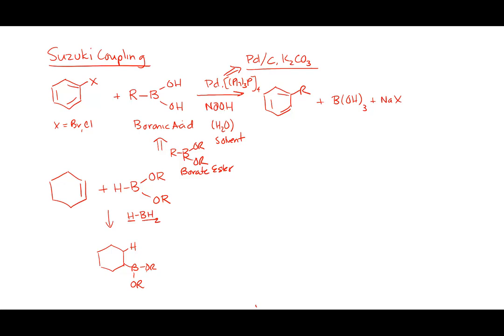Remember from hydroboration: BH3 adds H and B 100% cis with 100% anti-Markovnikov regioselectivity — that's why BH3/H2O2 gave anti-Markovnikov, cis addition of H and OH. The same rules apply here when making the borate ester from a double bond.